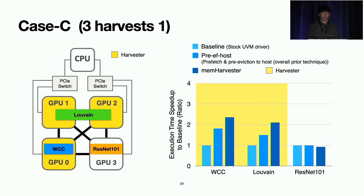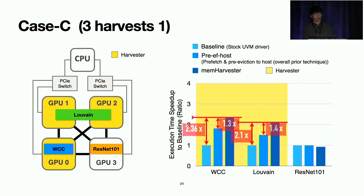For case C, WCC runs on GPU 0 and Louvain runs on GPUs 1 and 2, over-subscribing memory, while GPU 3 leaves spare memory. WCC and Louvain run on three GPUs and harvest one neighbor GPU's spare memory. Both show performance improvement in MemHarvester compared to baseline and the prior technique, with some performance interference on the neighbor GPU.